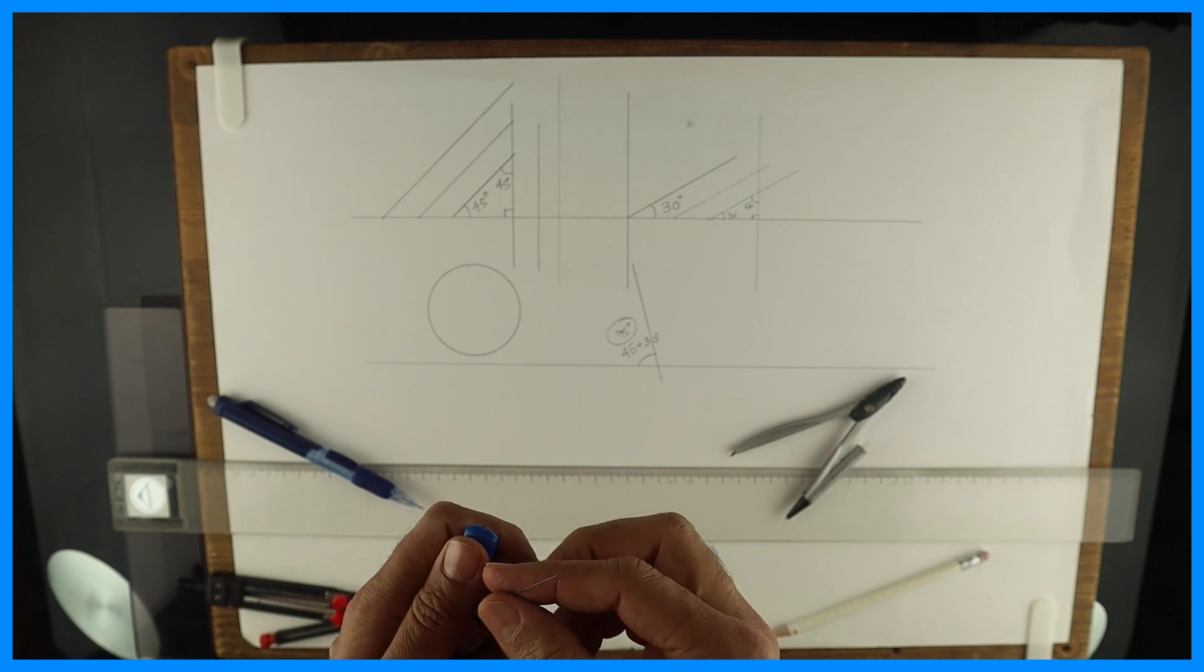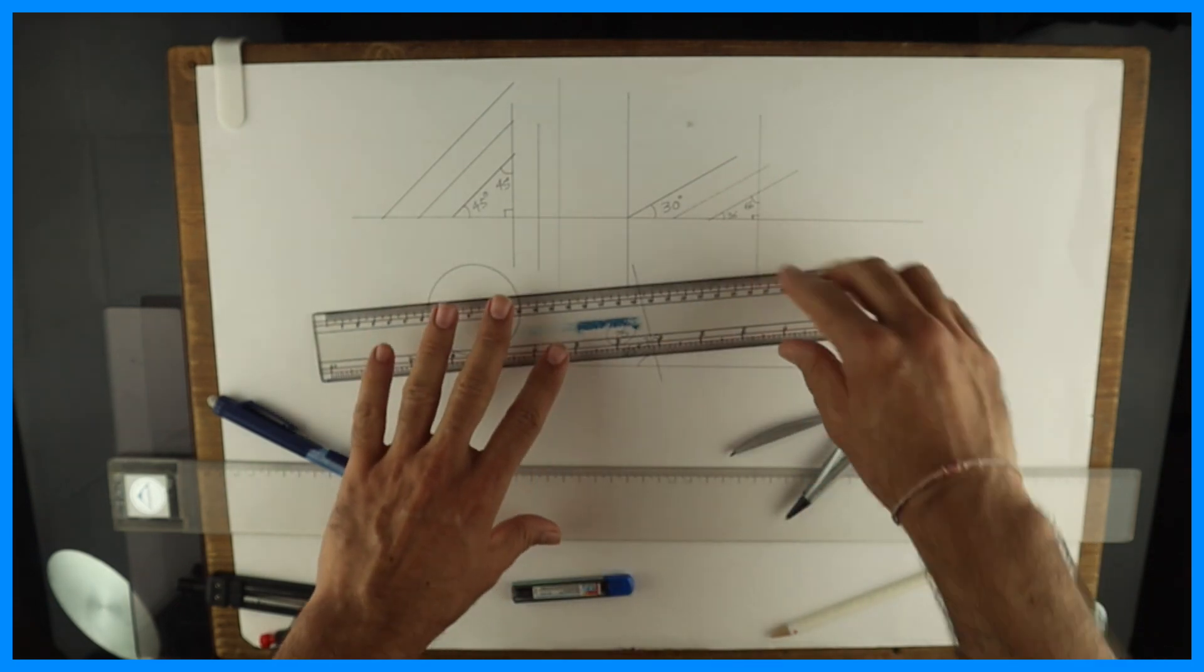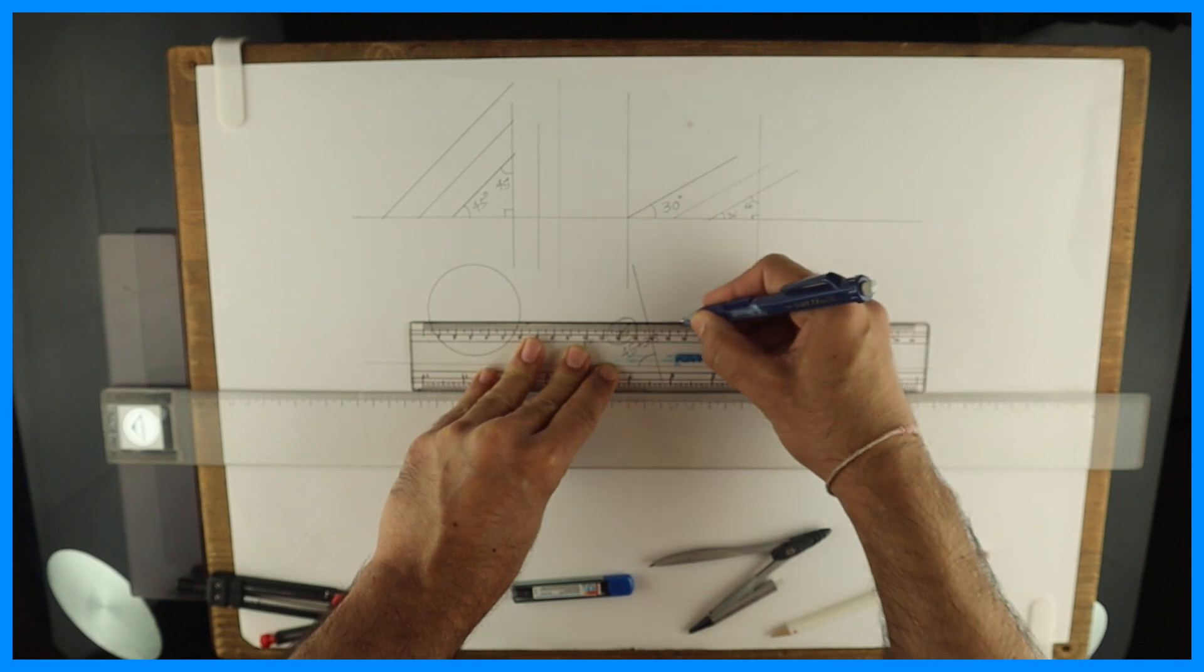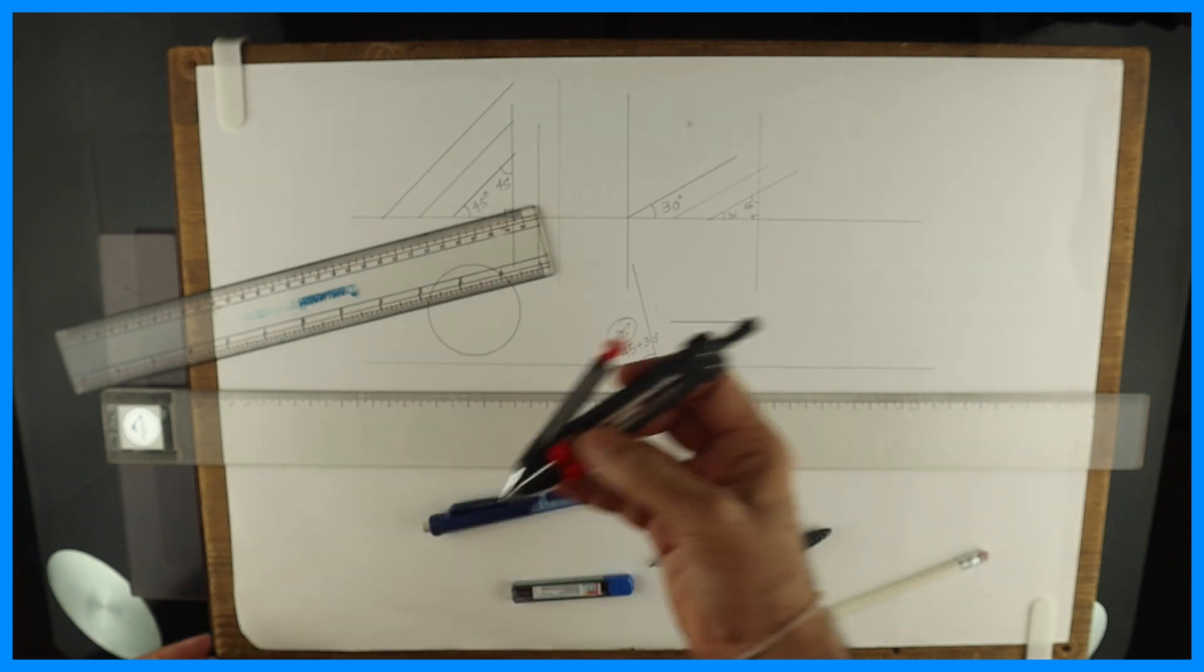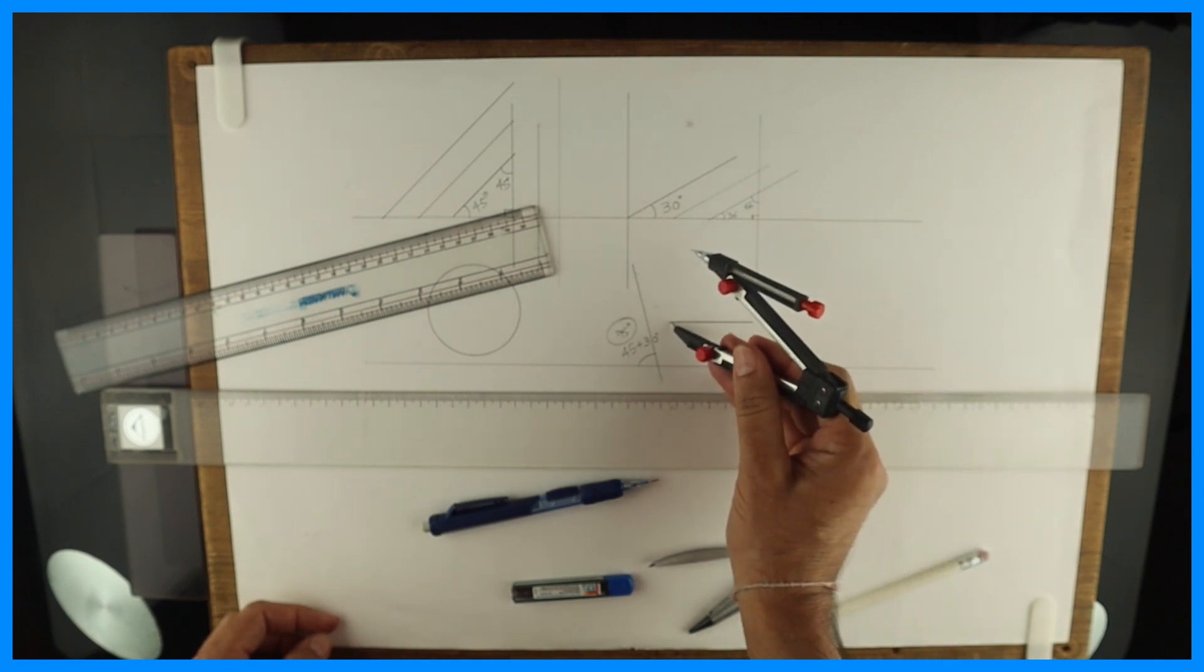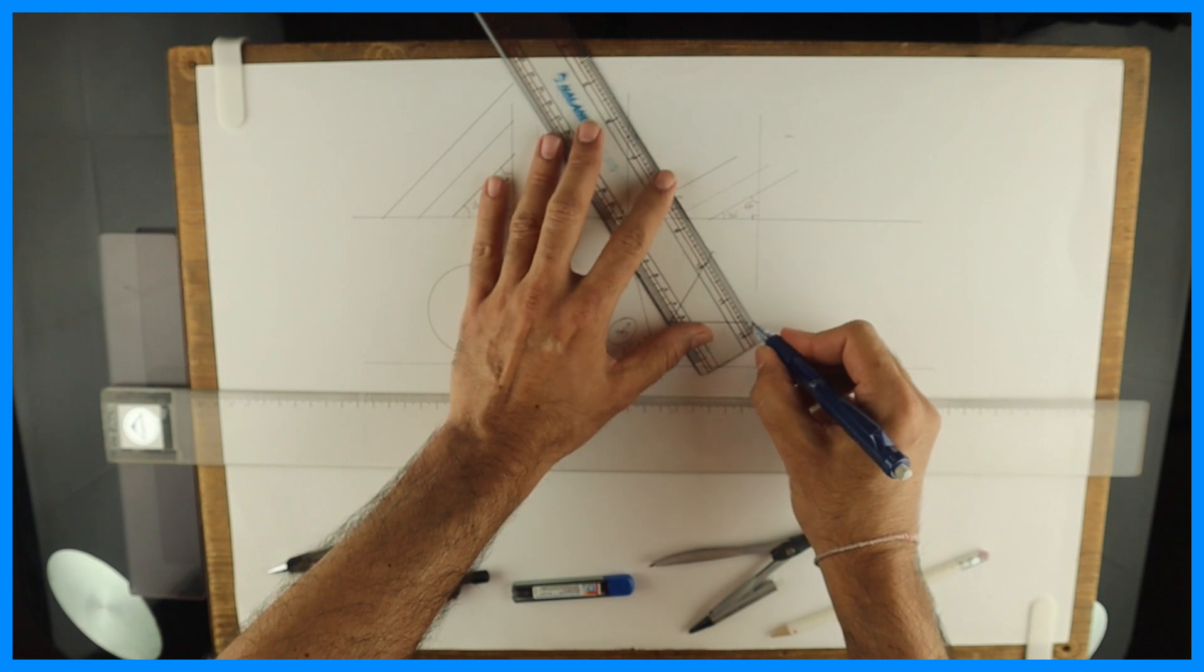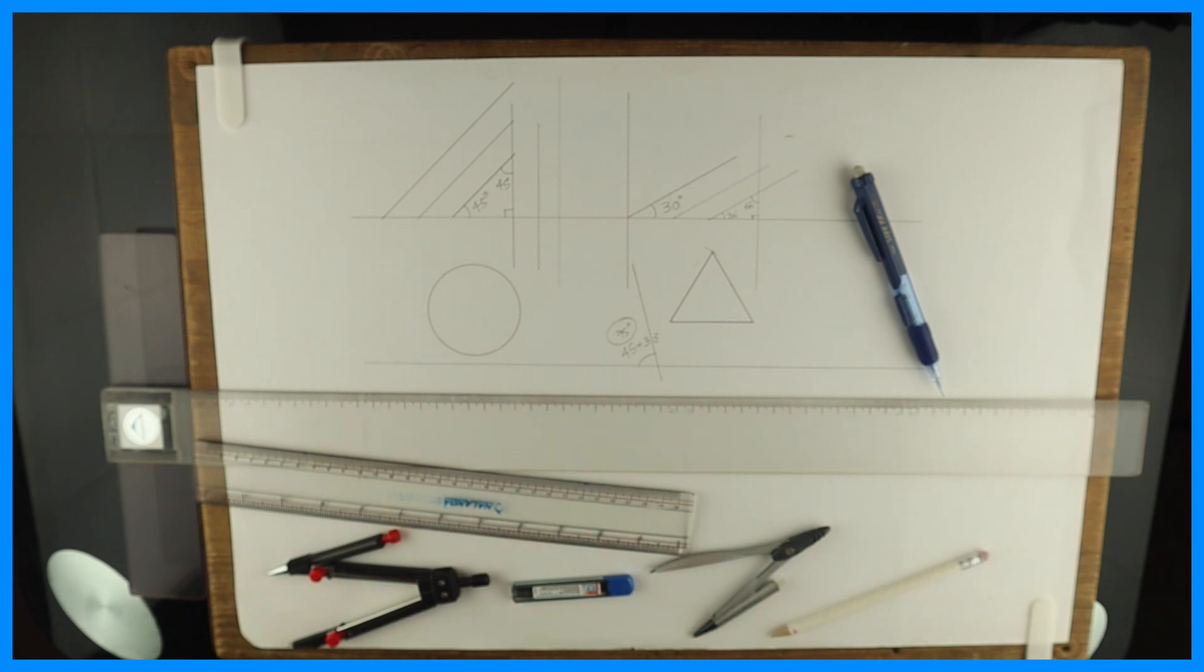See this. So up till now we have seen board, paper, clips, T-scale. Now we require scale also. See, generally T-scale will have markings, but if you don't have a marking you can use scale like this. And anyway, to use scale will be better because you can take dimensions directly. Because on T-scale you have to do maths, and this you can do directly. So 0.5 pen pencil, mechanical pencil, rounder, lead box, scale.